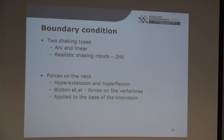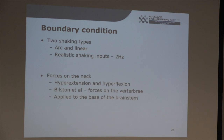The boundary conditions used for this model were the outputs from Tom's model. There were two types of shaking motions: an arc shake and a linear shake. A linear shake is when the infant torso is shaken linearly, resulting in the head moving in both a rotational and linear fashion. The arc shake is when the torso is shaken in an arc motion, also causing the head to rotate. The shaking inputs had a frequency of about 2 Hz, and it was the first time realistic shaking inputs like that had been used in a model of abusive head trauma.